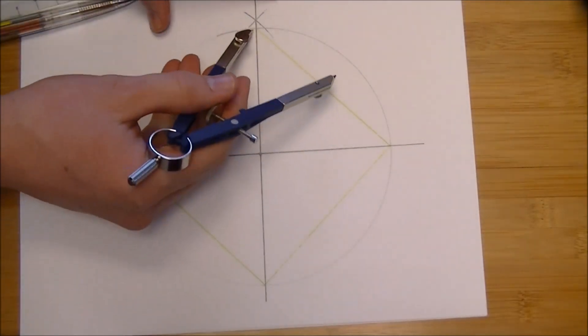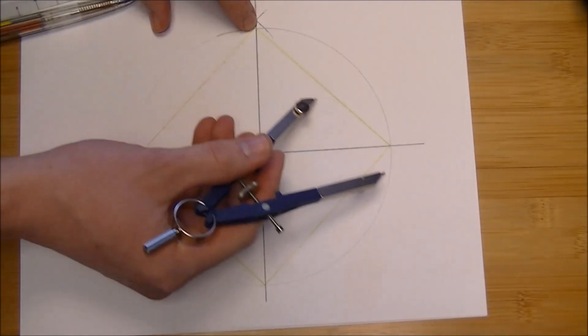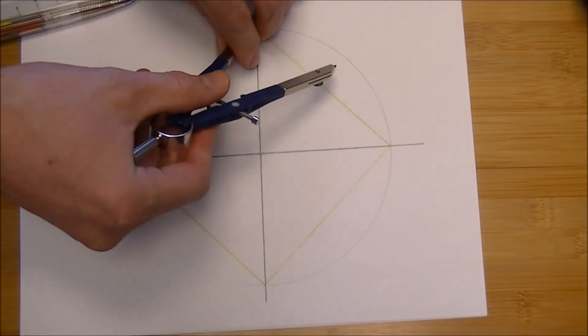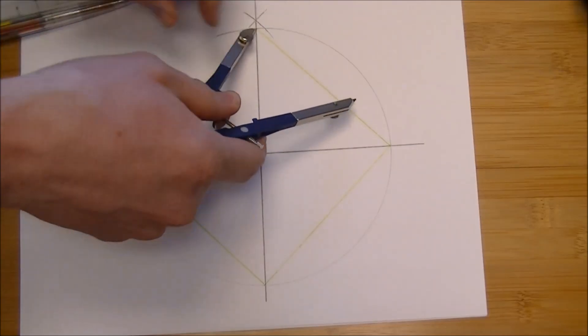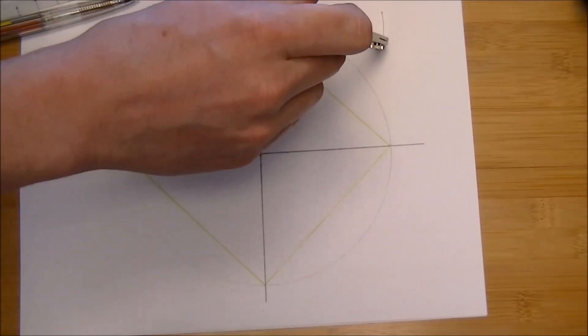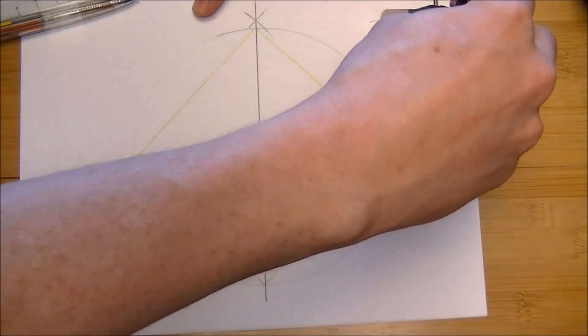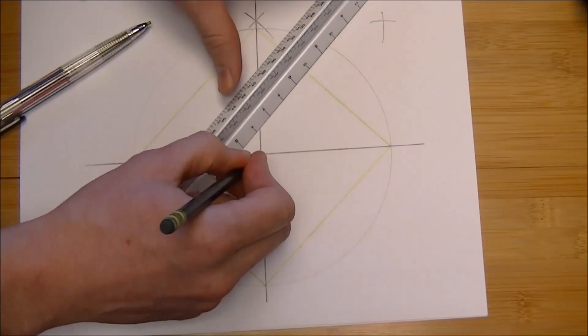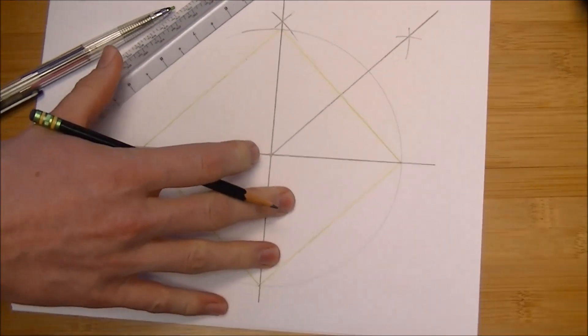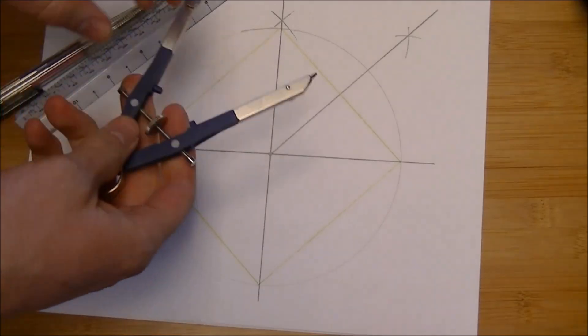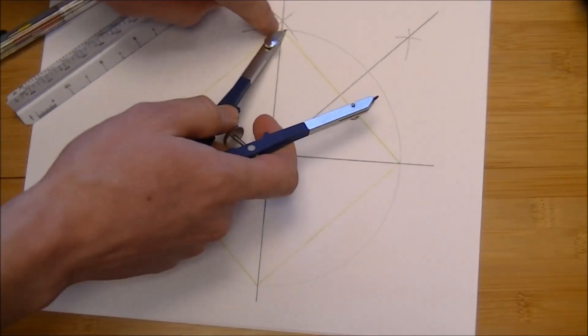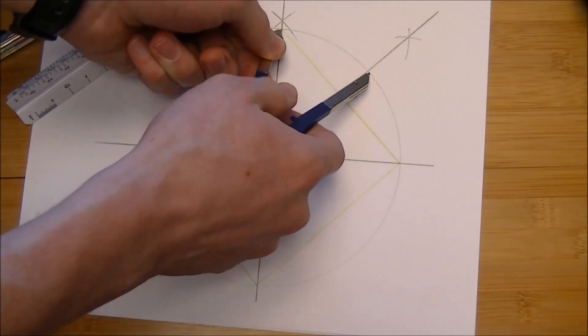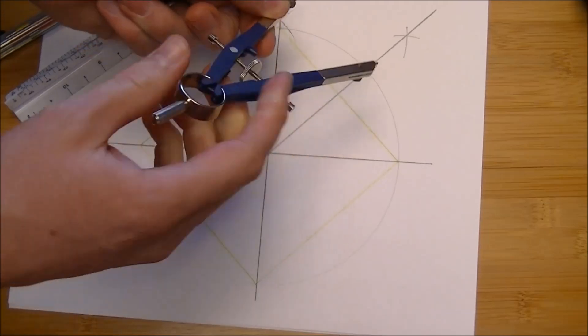We'll bisect this line segment from here to here by spreading our compass out farther than halfway across, making a mark from one side and a mark from the other side, and drawing that into the center of the circle. That will bisect that line segment. More importantly, it bisects this arc, and that gives us the length of each side of our octagon.